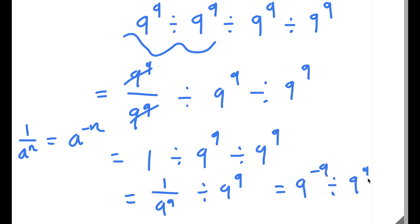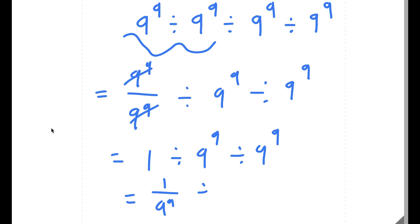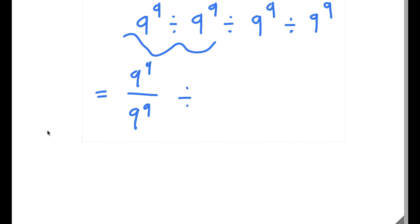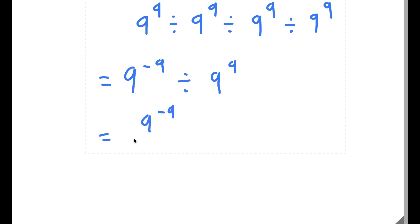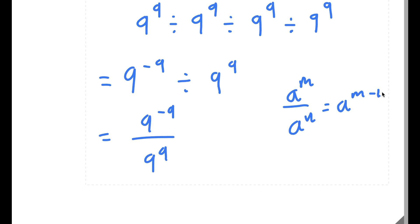Now I have 9 to the power of negative 9 divided by 9 to the power of 9. Let me clear out this page. I have 9 to the power of negative 9 divided by 9 to the power of 9. This is the same as 9 to the power of negative 9 over 9 to the power of 9. Using the rule a to the power of m over a to the power of n equals a to the power of m minus n, this gives 9 to the power of negative 9 minus 9. And negative 9 minus 9 equals negative 18.